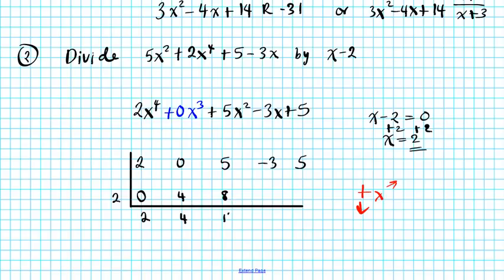13. 2 times 13, 26. Add down. 23. And then 2 times 23, 46. And then add down. 51.